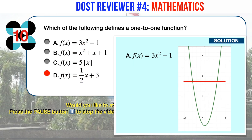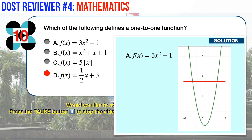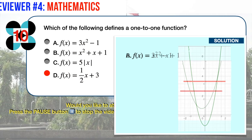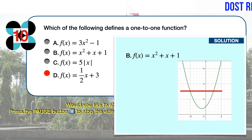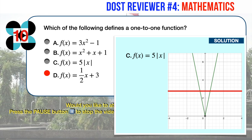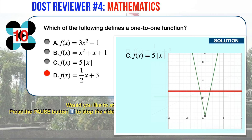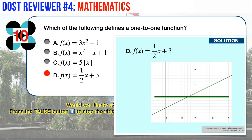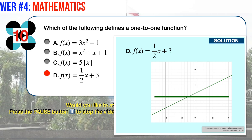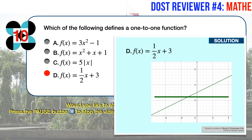Applying the horizontal line test: the function in A definitely fails; the function in B likewise fails; the function in C also fails. Finally, the function in D — one-half x plus 3 — is the only one that passes the horizontal line test, confirming it is a one-to-one function.